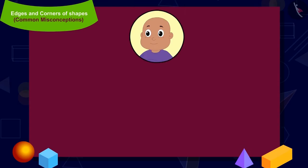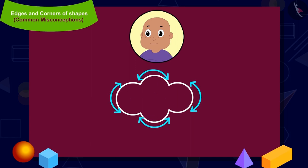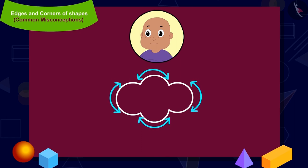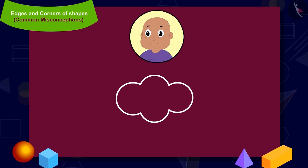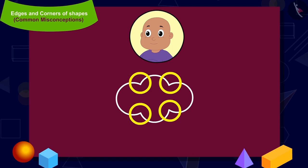Now let us have a look at Bablu's shape. Can you recognize the curved edges of Bablu's shape? You have recognized them correctly. How many total curved edges are there? Four. Now, can you recognize the corners of Bablu's shape? Bablu has made a shape where the corners are meeting two curved edges. How many corners are there in total? Four.